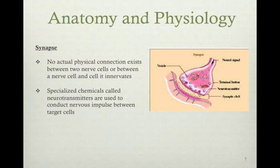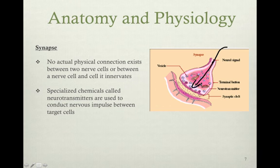Anatomy and physiology — synapsis. No actual physical connection exists between two nerve cells, or between nerve cells and their target end organs. Specialized chemicals called neurotransmitters conduct nerve impulses between target cells. A neural signal travels down the axon, hits the end plate, releases neurotransmitter into the synaptic cleft, and that neurotransmitter is picked up by the target tissue on the other side, performing the action.